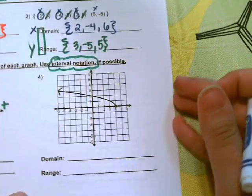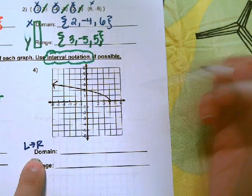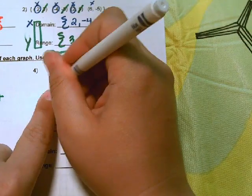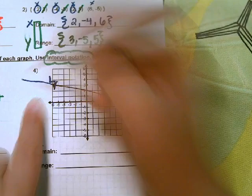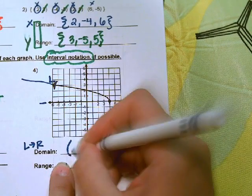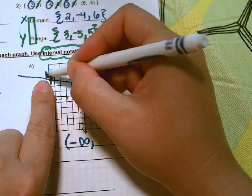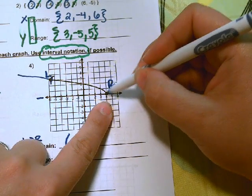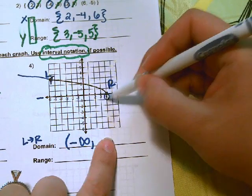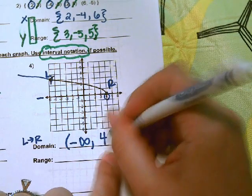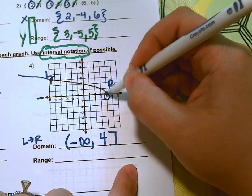Let's try another example. The domain is from the left to the right side. On the left there's an arrow, so the graph keeps going — that's the negative side, so we put negative infinity. Then on the right side there is no arrow, so it doesn't keep going. The x value on the right end is 4, and we use a bracket because it's a solid point — meaning 4 is included.